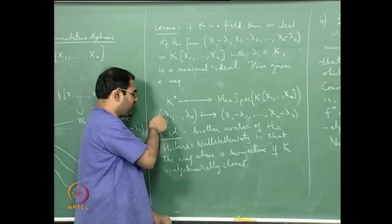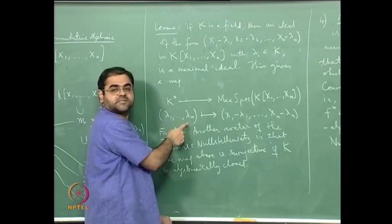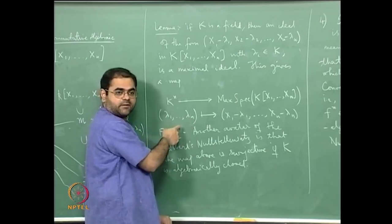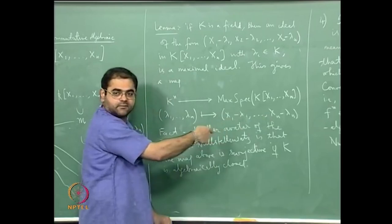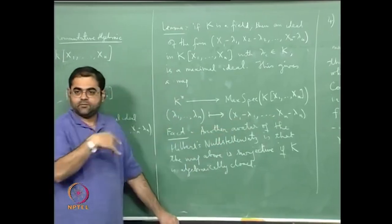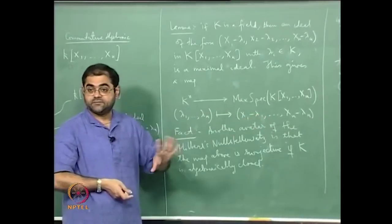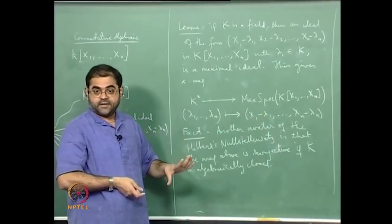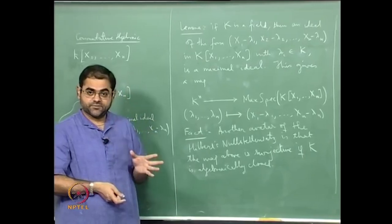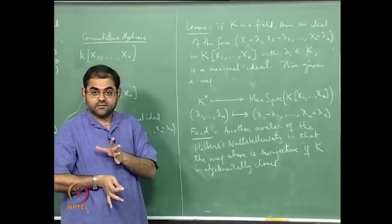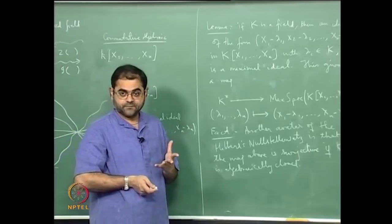It is also easy to see that this map is injective, because if you take two different points they will go to different maximal ideals. If two points have the same maximal ideal, then the coordinates must be equal. So injectivity is trivial; it is the surjectivity which is more serious, and that surjectivity is another avatar of the Hilbert Nullstellensatz.